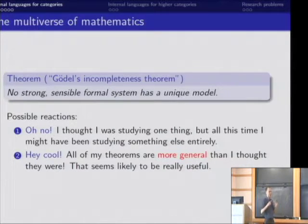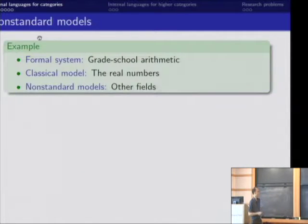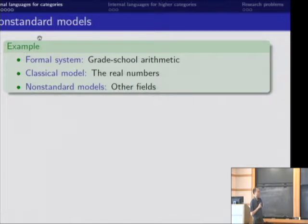So this is something that we're actually, I think as mathematicians, we're very familiar with in simpler contexts. For instance, here's an example of a formal system, grade school arithmetic. And when we're in grade school, we usually think about the real numbers or the rational numbers, but actually the rules of arithmetic apply to arbitrary fields, or rings, or whatever, depending on what rules you're using. And we're familiar with the idea that this is a really useful generalization.